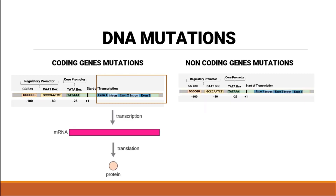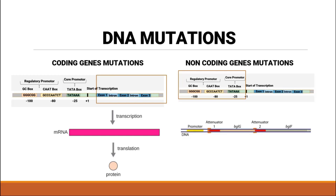Non-coding mutations can be present in the regulatory part of the DNA, which controls the amount of protein that needs to be synthesized. They can also be present at the attenuator site, where the process of transcription ends. So if the mutation is present in that region, it falls under non-coding gene mutations, whereas if it is transcribed and translated into a protein that is affected by it, it is called a coding gene mutation.